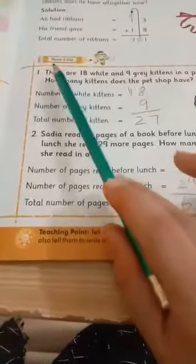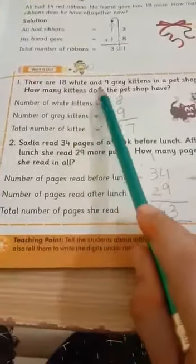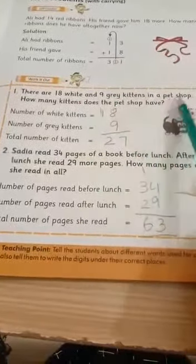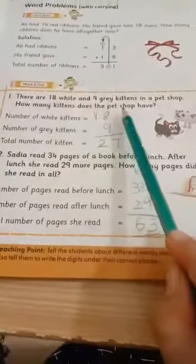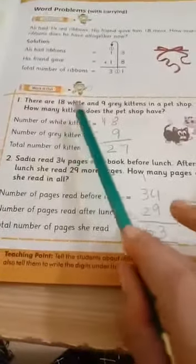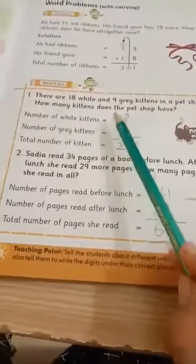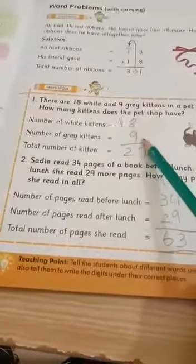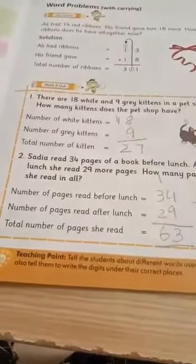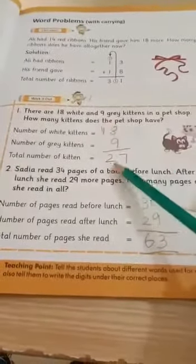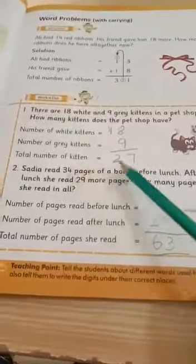There are 18 white and 9 grey kittens in a pet shop. How many kittens does the pet shop have? Number of white kittens: 18. Number of grey kittens: 9. Kittens kya hota hai? Billi ke bachche. 18 plus 9: 8 plus 9, 9, 10, 11, 12, 13, 14, 15, 16, 17. 7 and then you carry 1. 1 plus 1, 1 plus 1, 2. 27. Total number of kittens: 27.